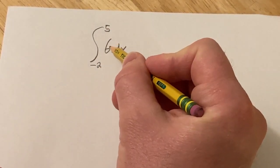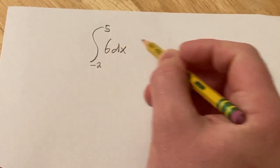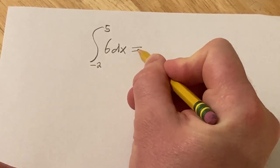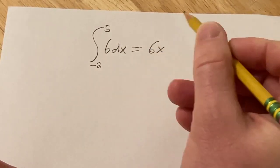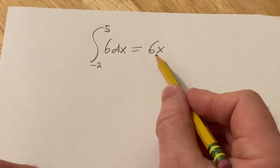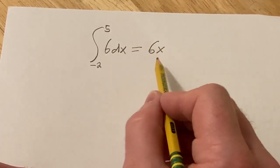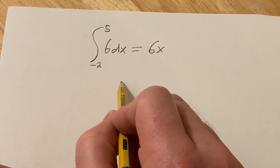So basically the first thing you want to do is integrate the 6. So whenever you have a constant you basically just add an x. So this is equal to 6x and you can check this by taking the derivative of this. The derivative of 6x is 6 because the derivative of x is 1. So you just get 6 times 1.